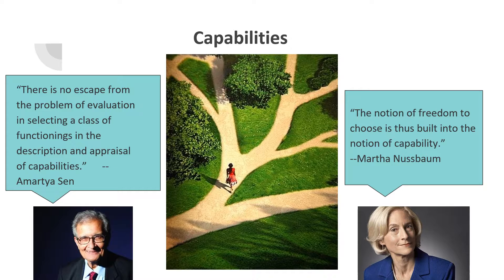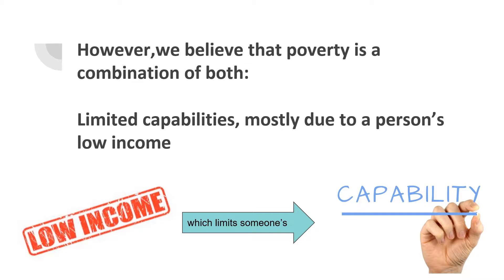Sen and Nussbaum have similar definitions of poverty. They both believe that capability should be a central part of poverty discussions. Money is not what's important to them — what's important is people's ability to live a good and meaningful life.